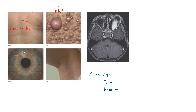Café-au-lait spots are also seen in McCune-Albright syndrome and in Carney complex. The image shows hamartomatous nodules over the iris — these are iris nodules otherwise known as Lisch nodules. You will also see axillary freckling — hyperpigmented spots in the axilla. Similarly, you may also get inguinal freckling.